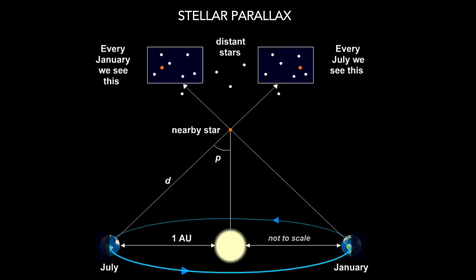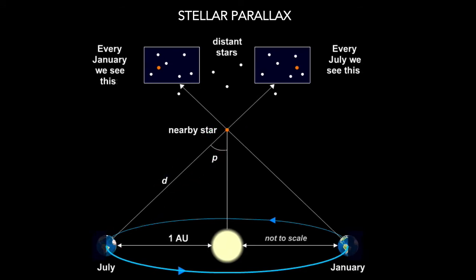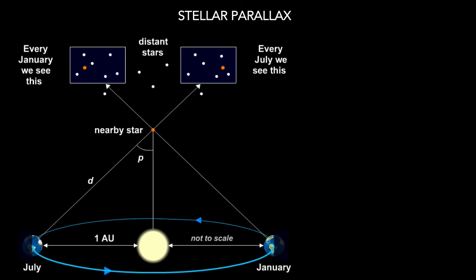Returning to our starting diagram, we see that the parallax angle P is part of a right triangle in which the opposite side is the Earth-Sun distance of one astronomical unit, and the hypotenuse is the distance d to the star. With a little trigonometry that we won't do here, this leads to a simple formula relating a star's parallax angle to its distance. This formula shows that smaller parallax angles go with stars at larger distances, just as we should expect from the fact that parallax is always smaller for more distant objects.